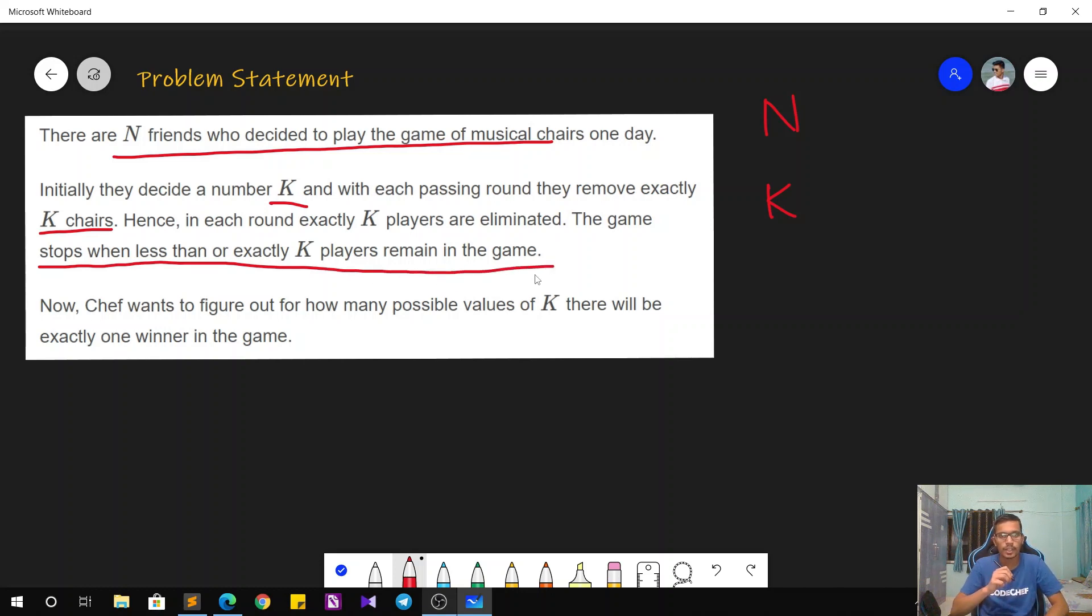For example, if we have initially N equals 11 and K equals 3, then after the first round we will have 11 minus 3, that is 8 chairs. After the second round we will have 8 minus 3, which is 5. After that, 5 minus 3 equals 2. And because now the number 2 is less than or equal to K, the game stops over here.